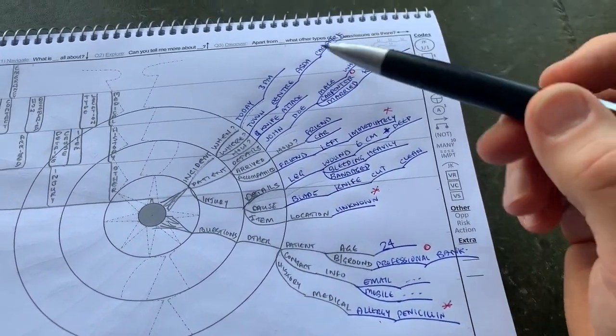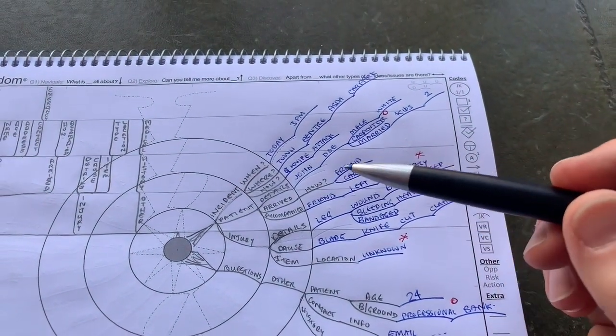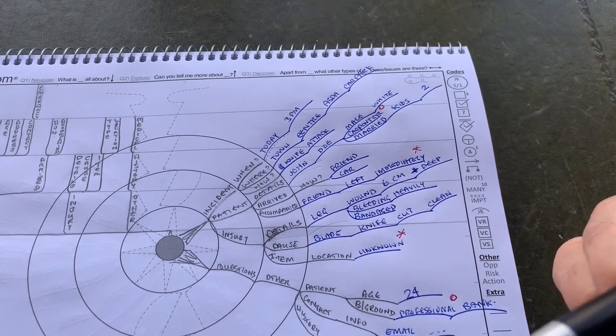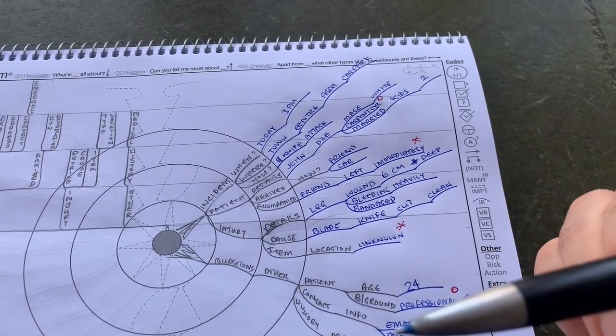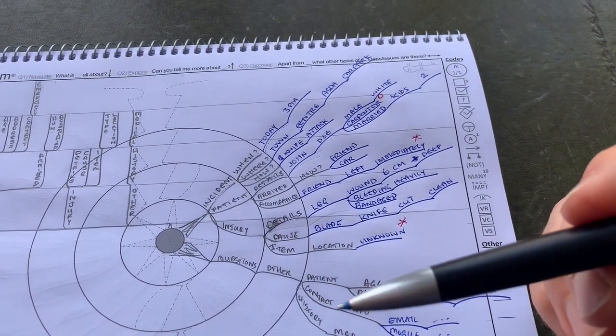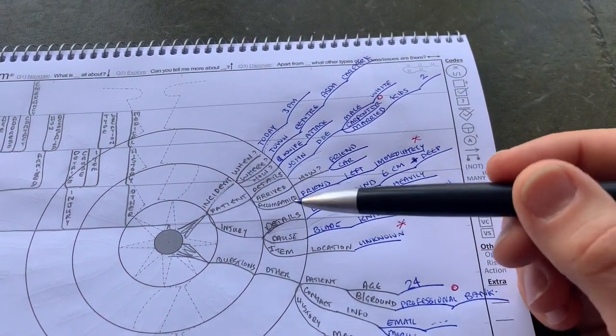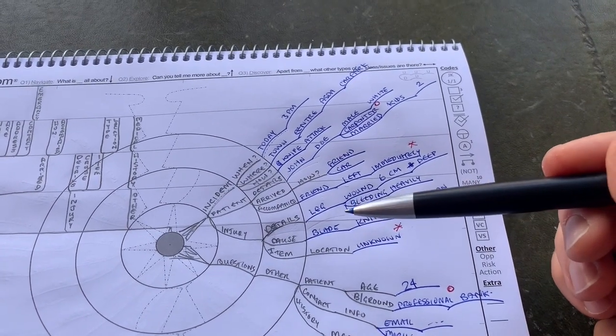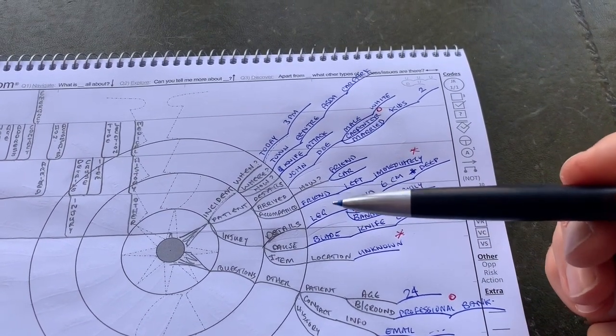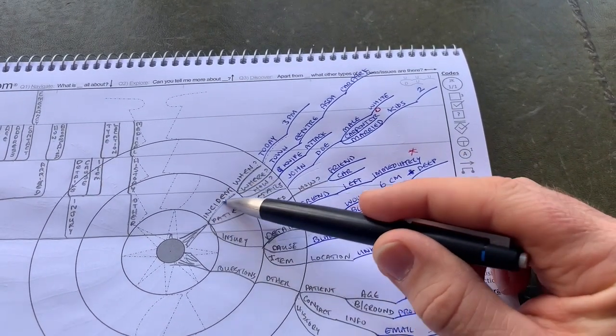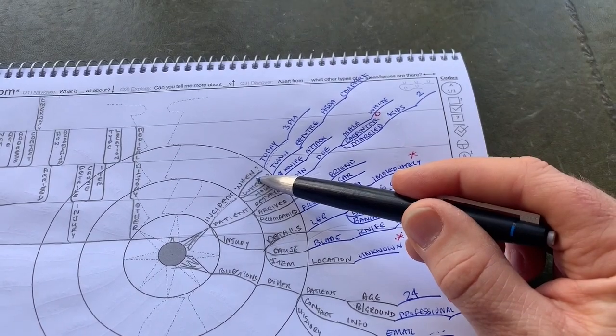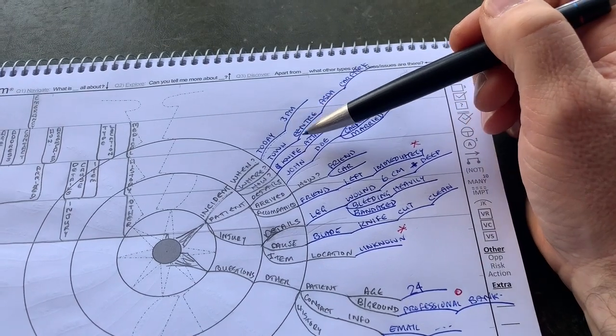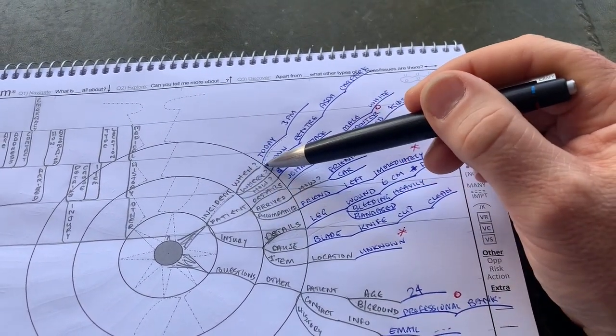Imagine I'm sitting down with the patient now and I'm asking the questions. If the patient gives me answers in a different order, because people rarely structure their thoughts in a completely organized way, that doesn't matter. Using these techniques I can capture the information in any order I'm given it and still see where I've got gaps and where I still need to ask questions. So I might start by saying tell me when the incident happened. I move over into the blue pen and capture the details.